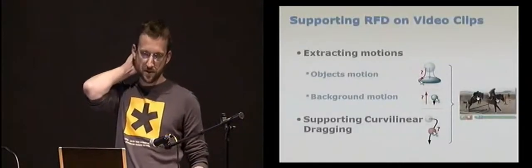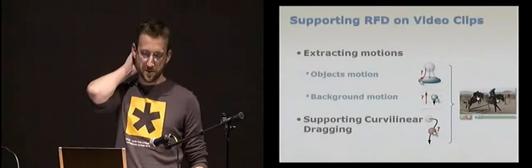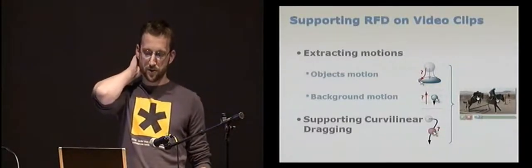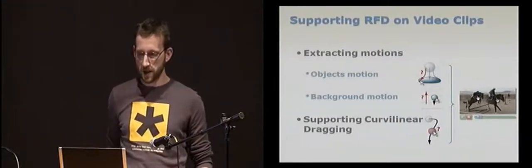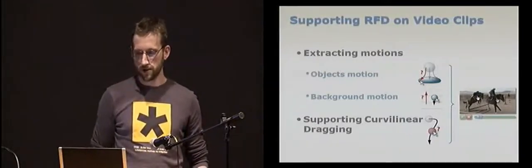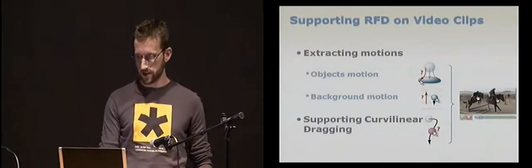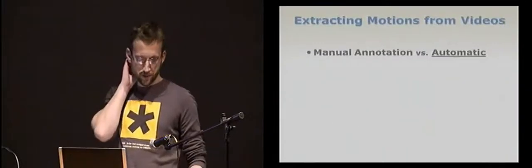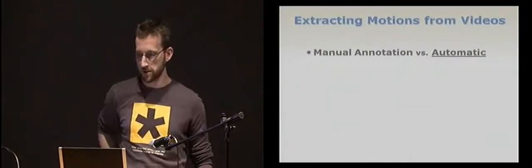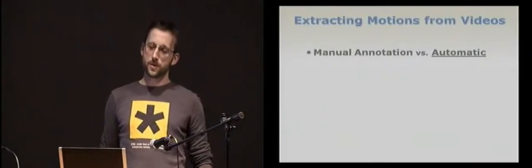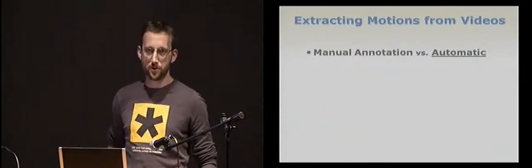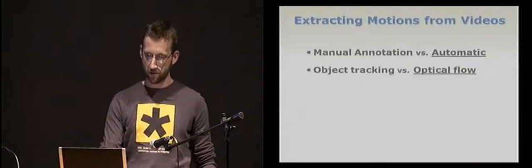Now it's easy to see that for supporting RFD for browsing videos, we need to solve three problems. Extracting object motion, extracting background motion to get relative motions, and finally, supporting curvilinear dragging on these motion curves, which can be arbitrary and can be complex. So I'll start with motion extraction. So first, we started to test the idea using manual annotation of motions, but here I will show you that automatic approach is also possible. So, motion estimation is an old problem in computer vision.